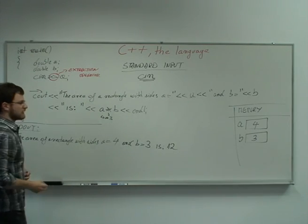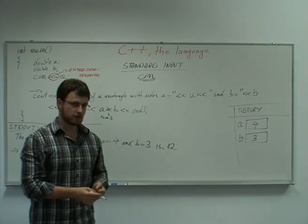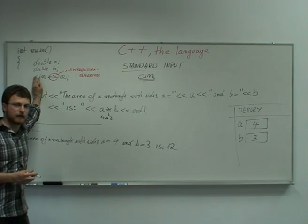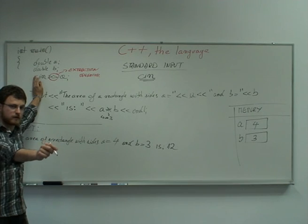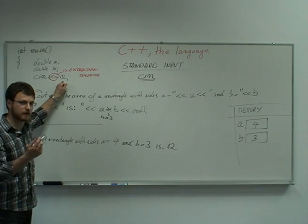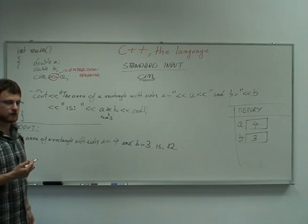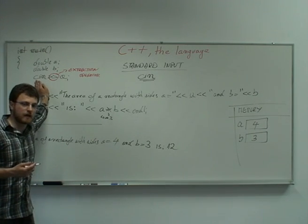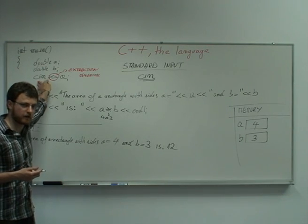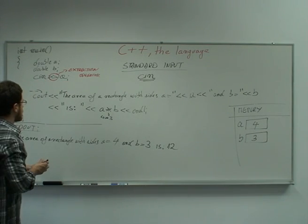So in some sense, it extracts information from standard input, which is always on its left hand side. And it places that value, which it has extracted, to the variable on its right hand side. So you always have a standard input object cin on the left hand side of this operator and a variable on the right hand side of this operator.